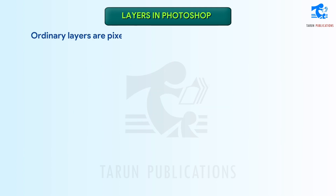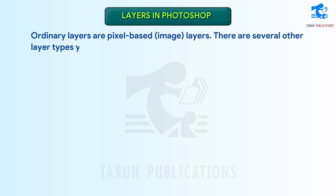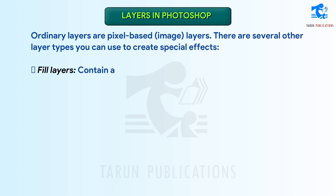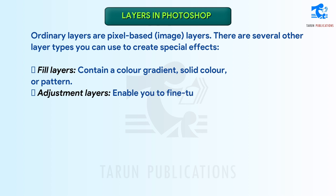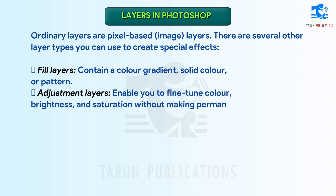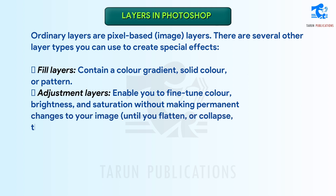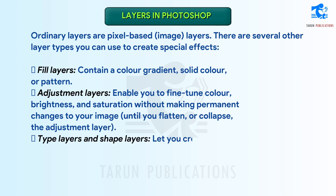Ordinary layers are pixel-based image layers. There are several other layer types you can use to create special effects. Fill layers contain a color gradient, solid color, or pattern. Adjustment layers enable you to fine-tune color, brightness, and saturation without making permanent changes to your image until you flatten or collapse the adjustment layer. Type layers and shape layers let you create vector-based text and shapes.